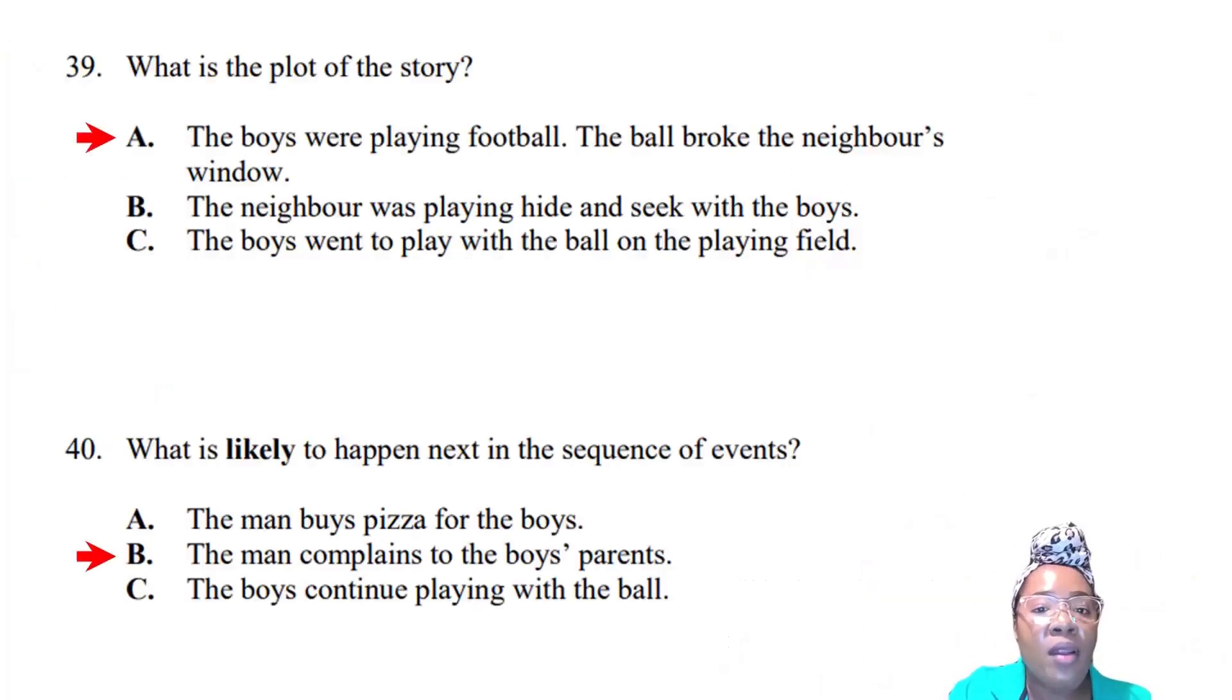Question thirty-nine: What is the plot of the story? Plot is the action, what happened. The answer is A: the boys were playing football, the ball broke the neighbor's window. They weren't playing hide and seek, and they weren't on a playing field. Question forty: What is likely to happen next? The boys wouldn't just get pizza, and they wouldn't just continue playing. The most likely answer is B: the man complains to the boys' parents.